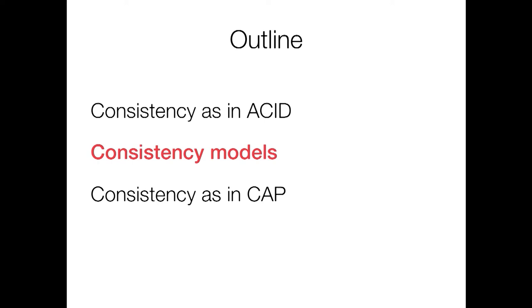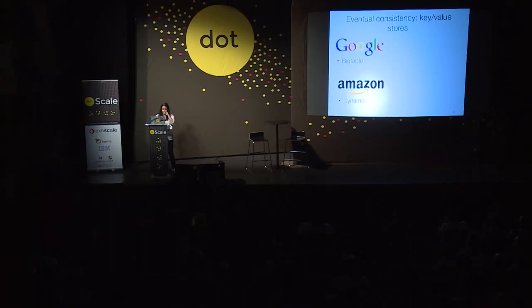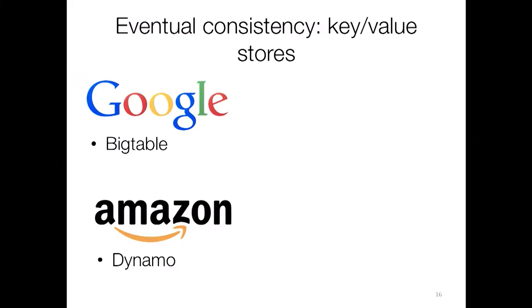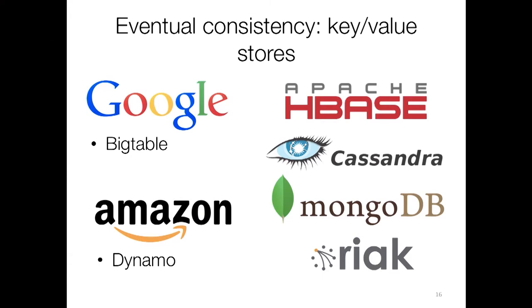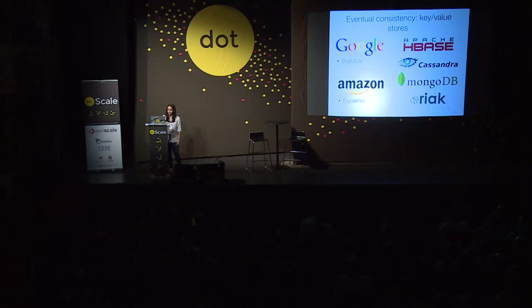Now let's talk about consistency models. There are a lot of different types of consistency models. What these are all talking about is: if you take a schedule of reads and writes — just reads and writes, not talking about transactions anymore — then what kinds of orderings and return values from those reads and writes are legal? First, we can talk about eventual consistency. This model allows a lot of interleavings of reads and writes. In 2006, Google published the Bigtable paper, and in 2007, Amazon published the Dynamo paper. These two papers kicked off this big NoSQL movement, and there have been a lot of open source NoSQL systems which run with eventual consistency.